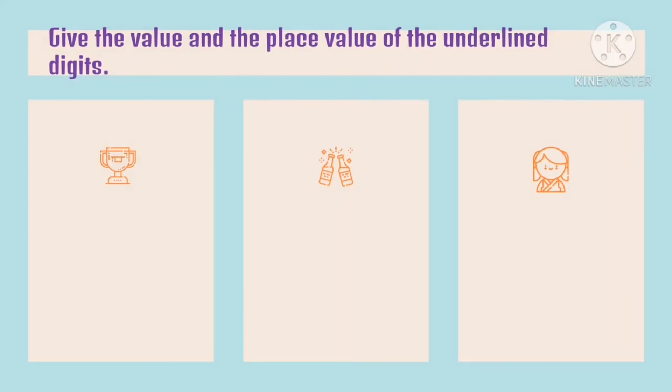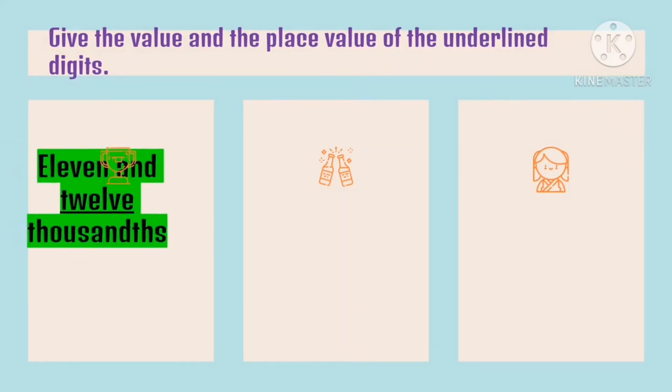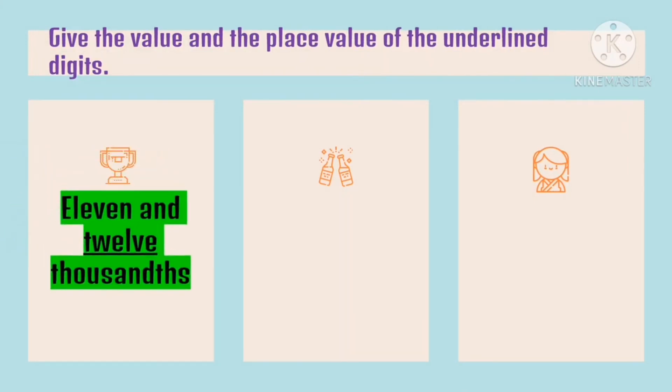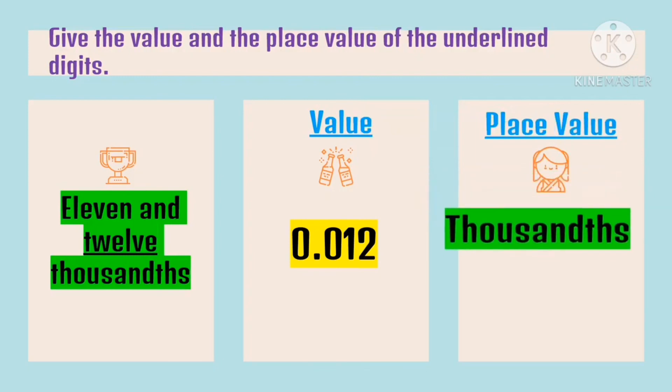Now, give the value and the place value of 11.012. The underlined digit is twelve. Again, the value of twelve is twelve thousandths, wherein zero holds the place value for the tenths place. And the place value of twelve is thousandths.